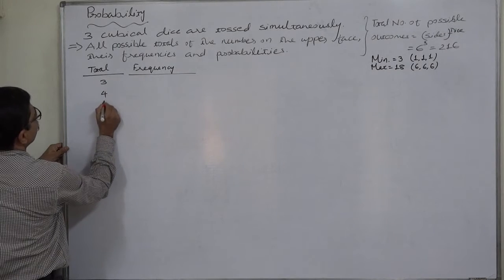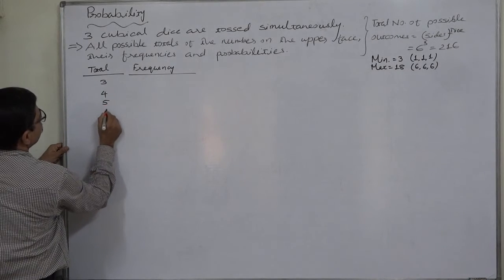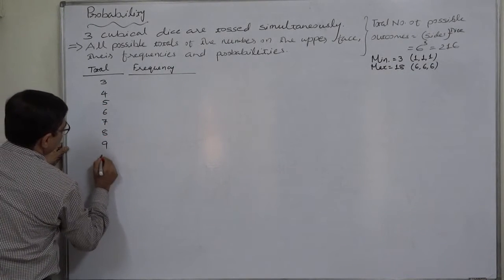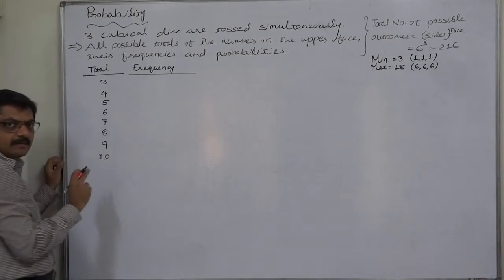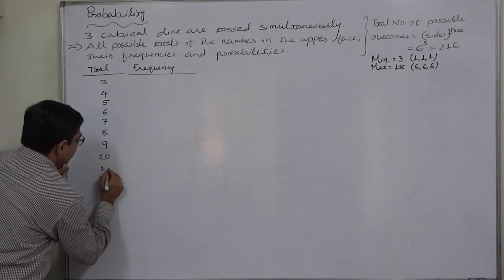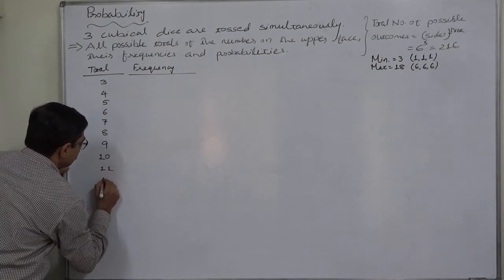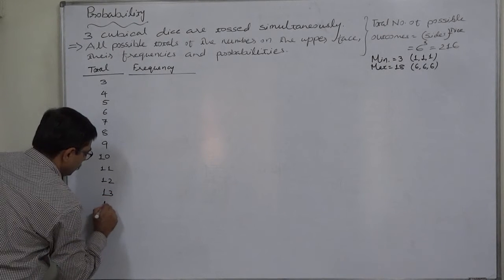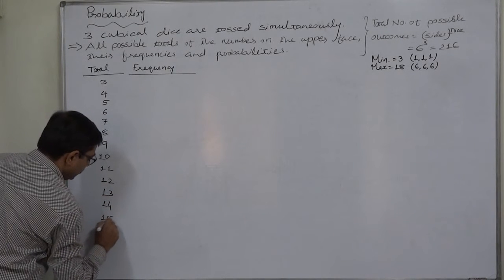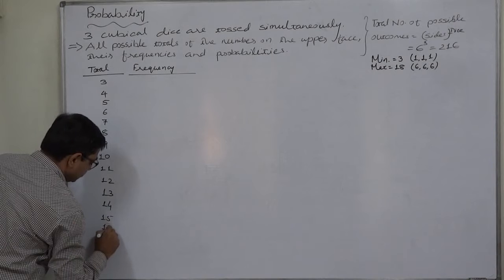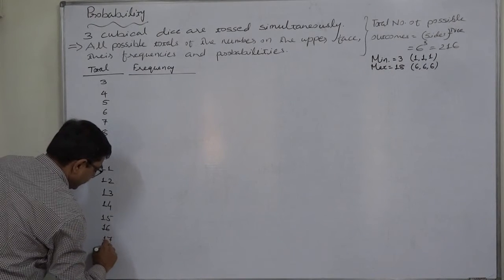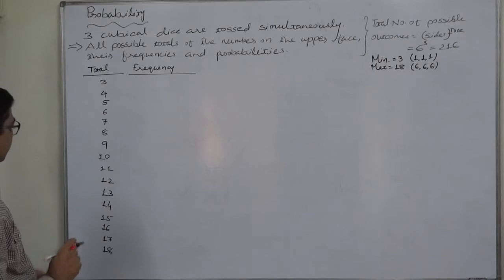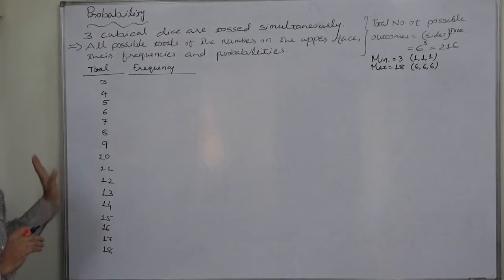The totals are: three, four, five, six, seven, eight, nine, ten — ten will be the landmark — eleven, twelve, thirteen, fourteen, fifteen, sixteen, seventeen, and the highest possible total is eighteen. All these are possible outcomes.